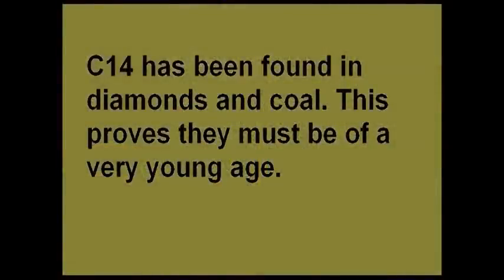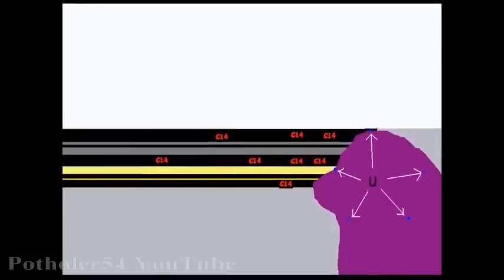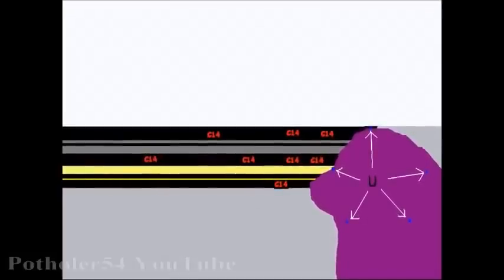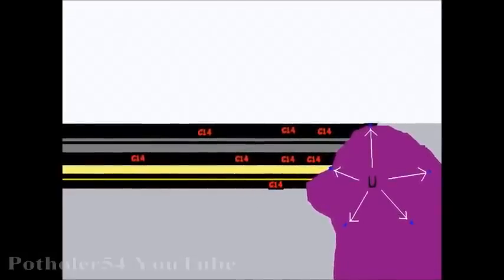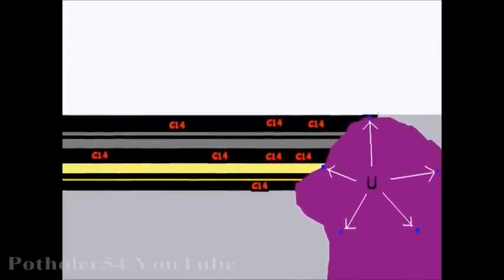But carbon dating isn't used on diamonds and coal, and for very good reason. As I explained, C14 is formed when neutrons collide with nitrogen atoms. The C14 used in carbon dating originated in the atmosphere. But you can also get it deep underground, in places where decaying uranium is giving off neutrons. Coal and diamonds are made of carbon, so you'd expect to find higher levels of C14 in coal and diamonds close to rocks that contain uranium, and much lower levels away from those rocks. And that's exactly what we do find.